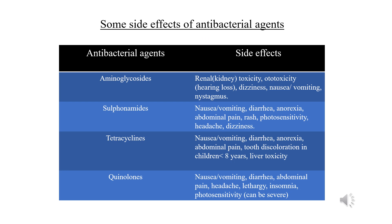The major side effects of aminoglycosides are kidney injury, hearing impairment, vestibular toxicity, dizziness, and nystagmus. The side effects of sulfonamides include nausea, vomiting, diarrhea, anorexia, abdominal pain, rash, photosensitivity, headache, and dizziness. The side effects of tetracyclines are vomiting, diarrhea, anorexia, abdominal pain, tooth discoloration in children below 8 years, and liver toxicity.